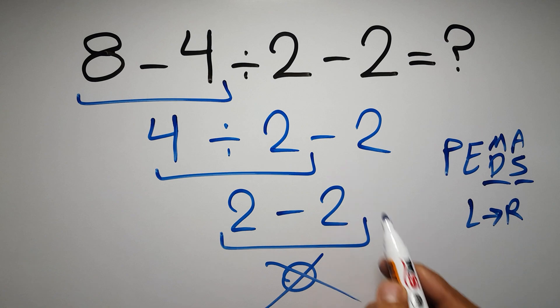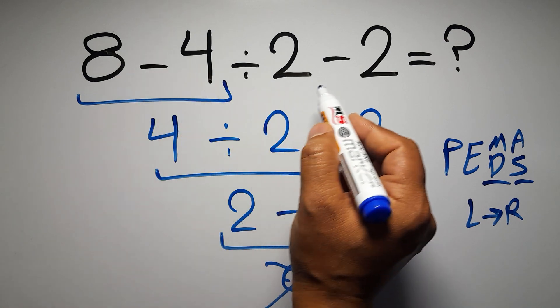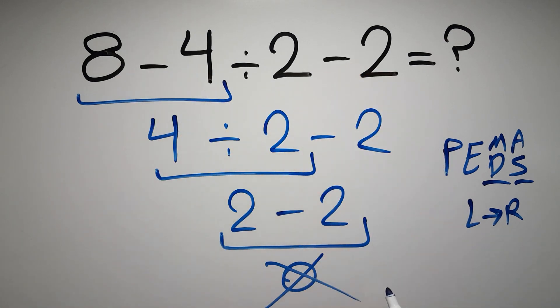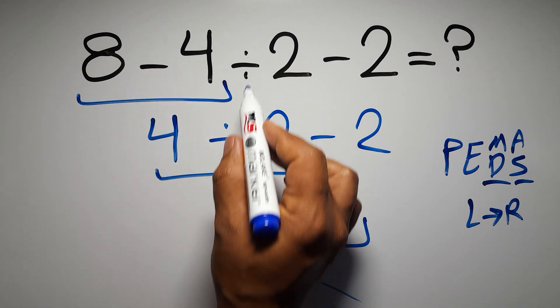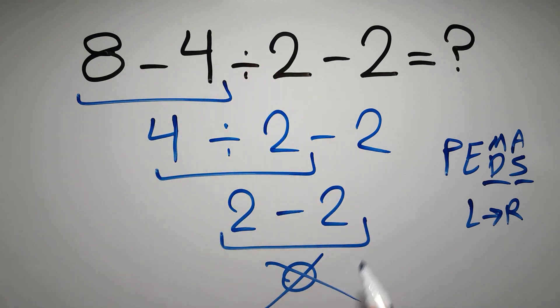Then this subtraction, and finally this subtraction. If we do this subtraction before this division or this subtraction, it is wrong.